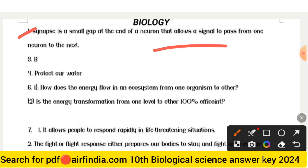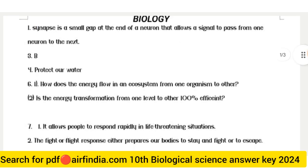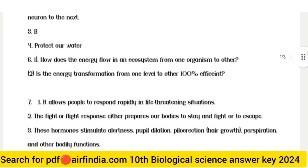Question 1 answer: Synapse. A synapse is a small gap at the end of a neuron that allows a signal to pass from one neuron to the next.